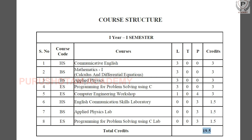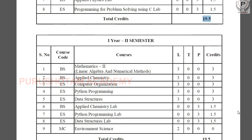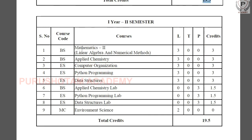So in the first year first semester, you need to pass the subjects and the labs to earn 19.5 credits. Similarly, let's look at the second semester. In the second semester, the subjects are: Mathematics 2 — Linear Algebra and Numerical Methods — with 3 lecture points and 3 credits; Applied Chemistry with 3 lecture points and 3 credits; Computer Organization with 3 credits; Python Programming with 3 credits; and Data Structures with 3 credits.